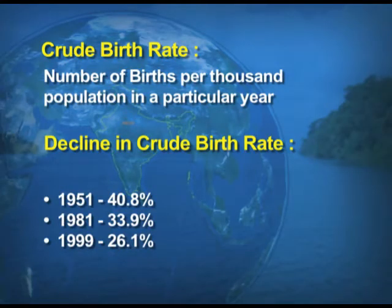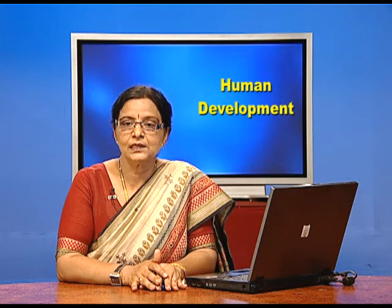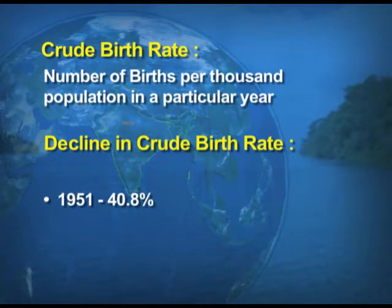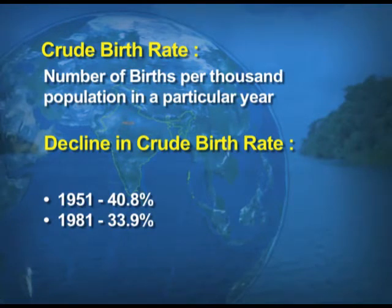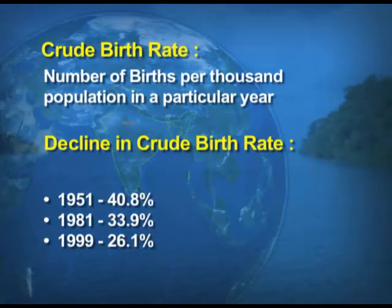The crude birth rate is the number of births per thousand population in a particular year. The birth rate has also declined, though not as sharply: in 1951 it was 40.8%, which reduced to 33.9% in 1981, and further declined to 26.1% in 1999.